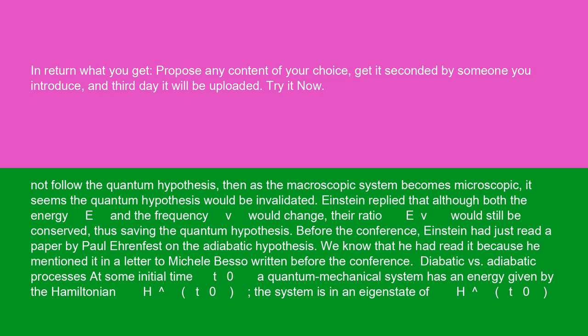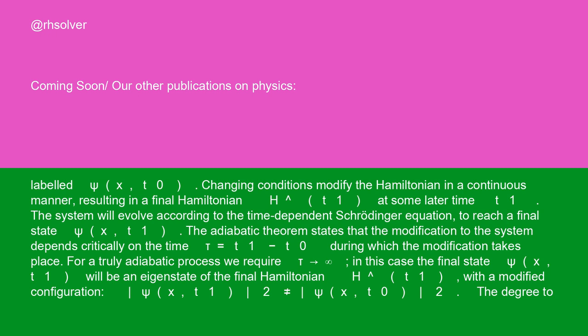Diabatic versus adiabatic processes: at some initial time T0, a quantum mechanical system has an energy given by the Hamiltonian H-hat(T0). The system is in an eigenstate of H-hat(T0), labeled psi(x, T0). Changing conditions modify the Hamiltonian in a continuous manner, resulting in a final Hamiltonian H-hat(T1) at some later time T1. The system will evolve according to the time-dependent Schrödinger equation to reach a final state psi(x, T1).